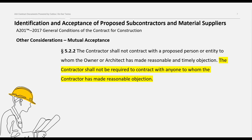The sections that follow 5.2.1 provide other important considerations during the process of identifying and accepting subcontractors and material suppliers. For example, Section 5.2.2 requires that the subcontractor and suppliers must be mutually acceptable to the owner, architect, and contractor. Essentially, this section states that while the contractor cannot utilize a proposed subcontractor that has been timely rejected by the owner and architect, the contractor cannot be forced to use a subcontractor to whom it has also made reasonable objection.